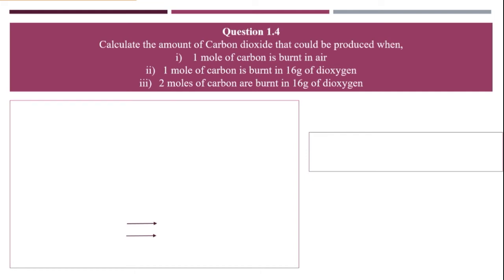One mole of carbon is burnt in air. Part ii: one mole of carbon is burnt in 16 grams of dioxygen. And part iii: two moles of carbon are burnt in 16 grams of dioxygen. These are the three questions given to us and we need to calculate the amount of carbon dioxide, which means your answer should be in grams.